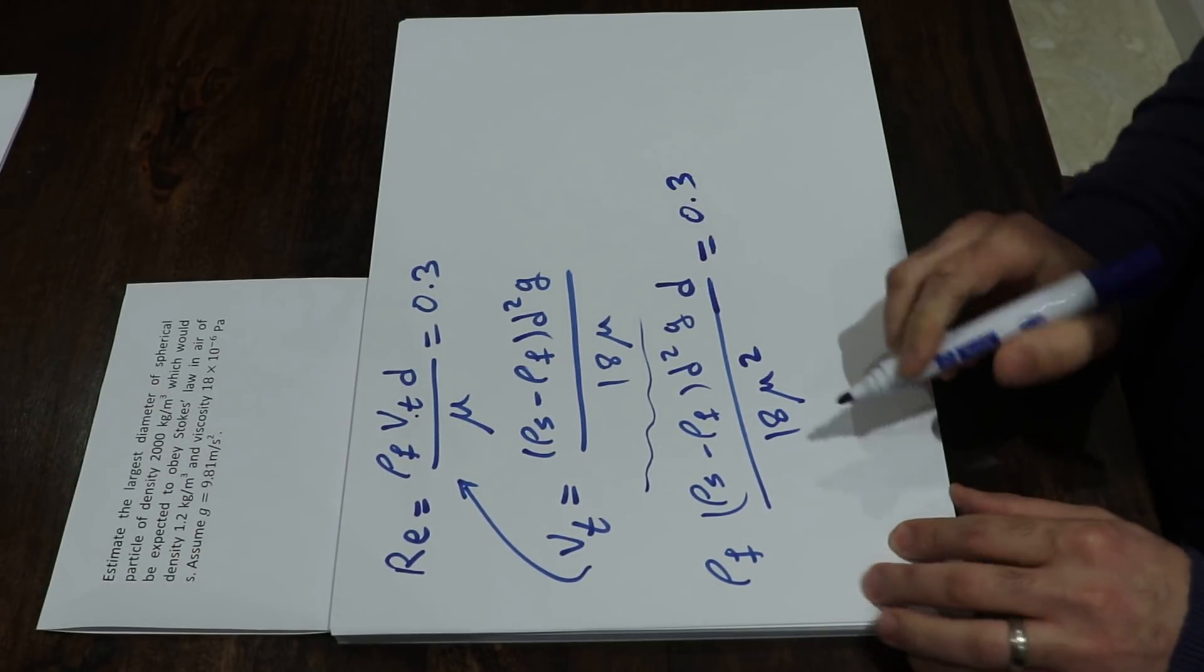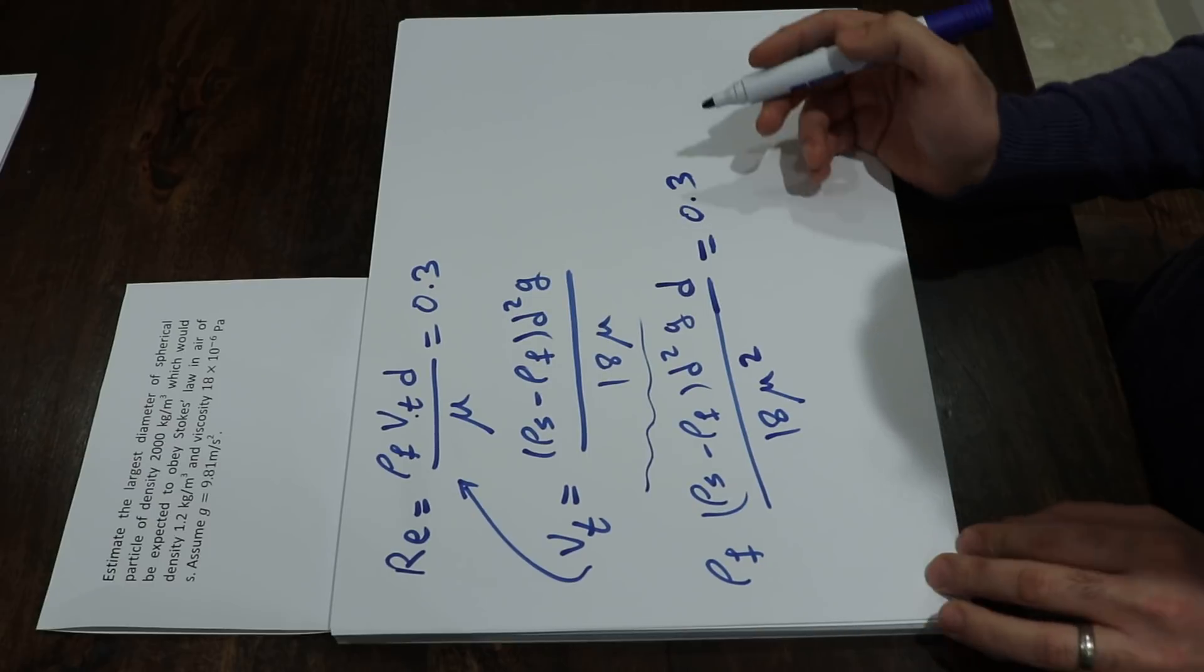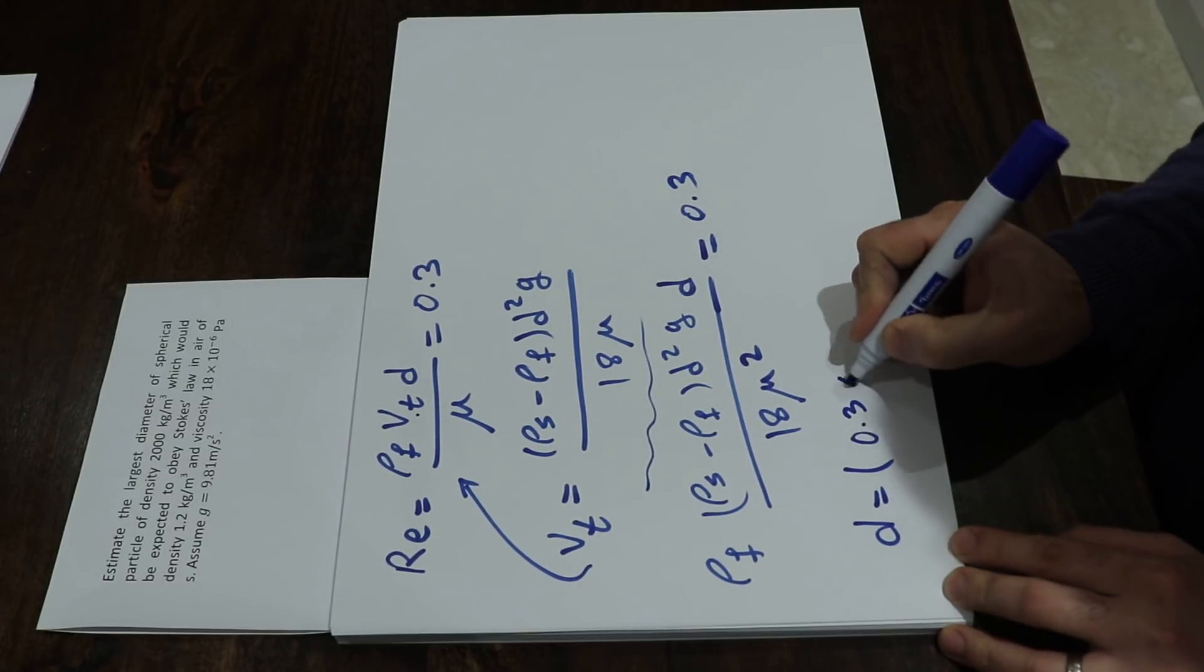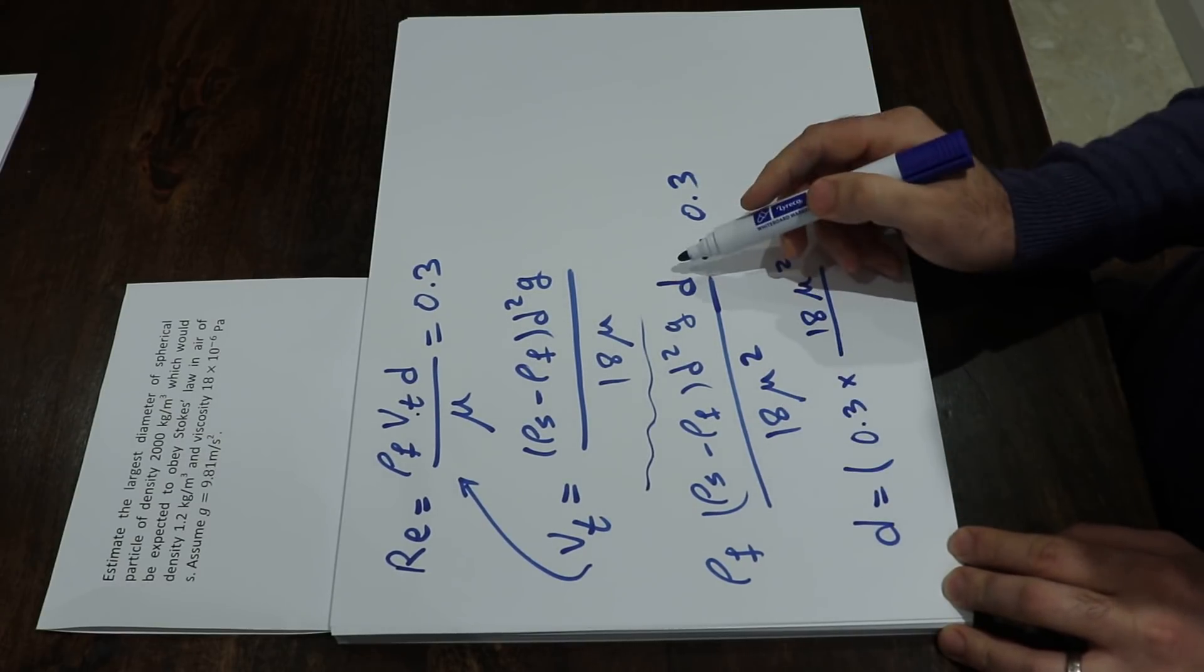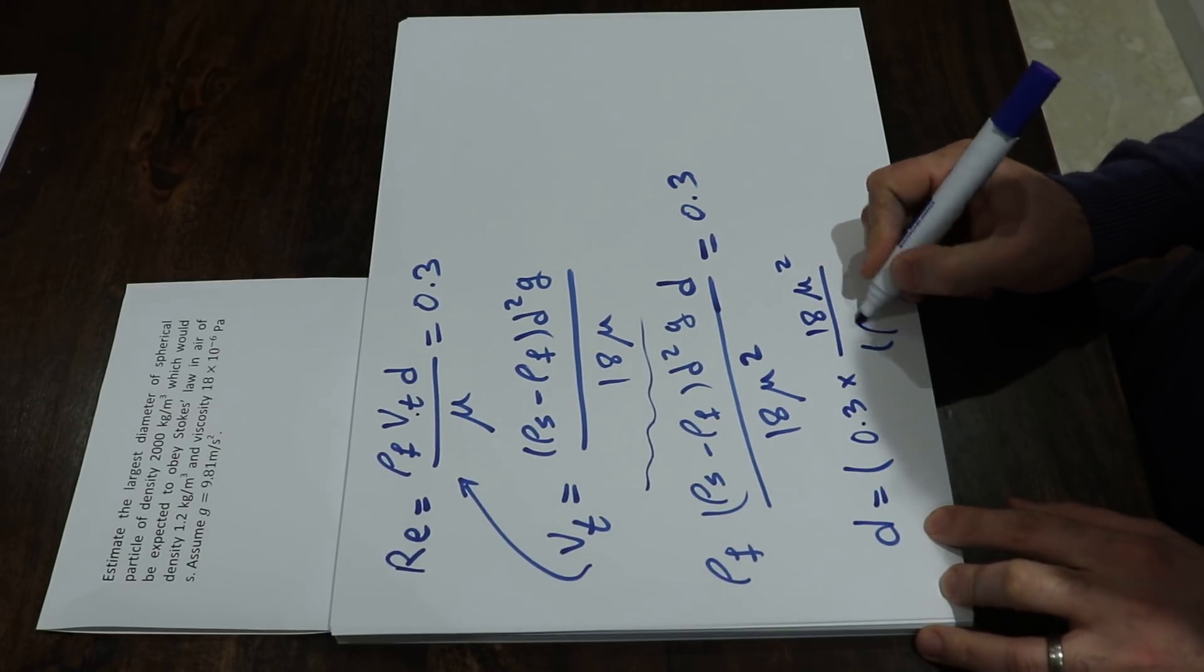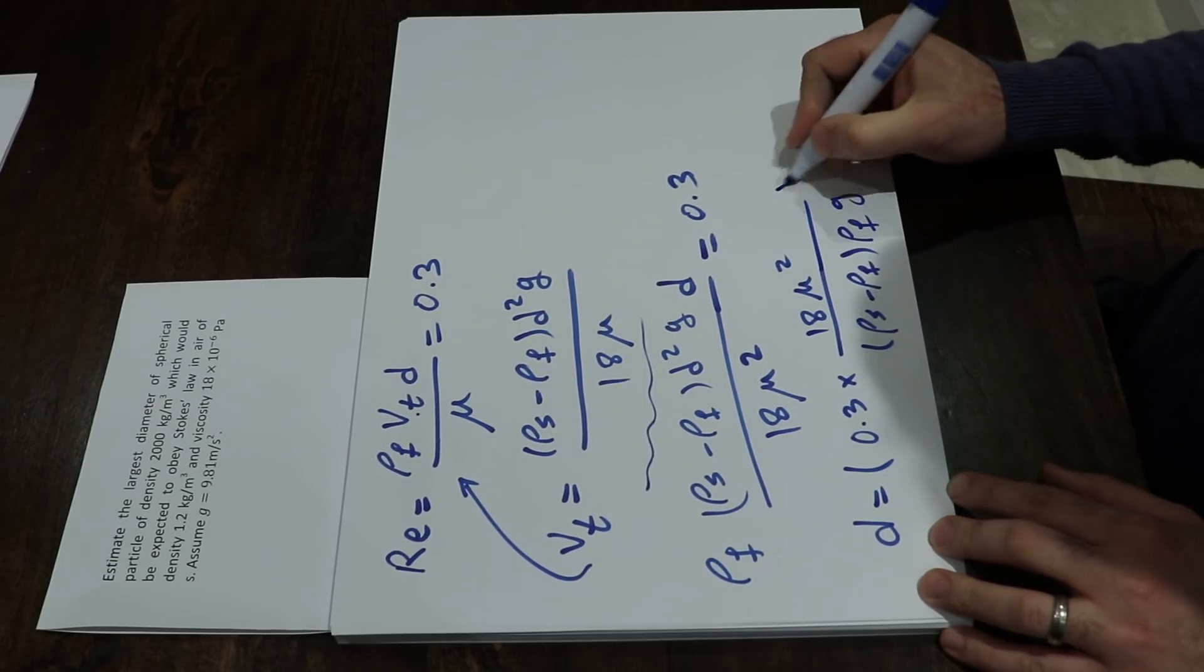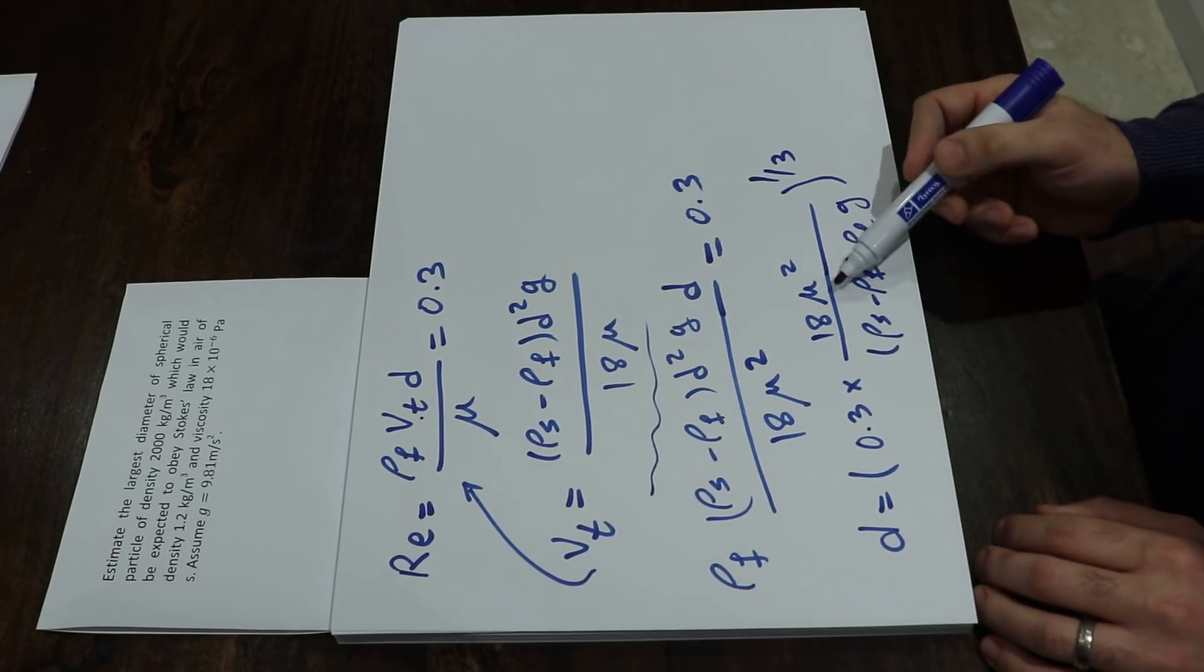Now if you rearrange this equation to express d as a function of other parameters, you get: d = [0.3 × 18μ² / ((ρs - ρF) × ρF × g)]^(1/3), because d² times d is d³.